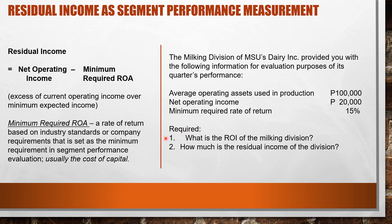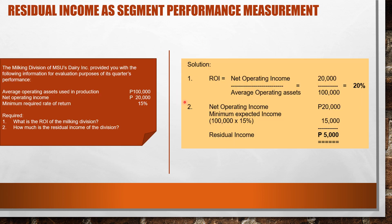Requirements: number one, what is the ROI of the Milking Division? We substitute the given figures into the ROI formula. ROI is net operating income divided by average operating assets. In the problem, we have net operating income of $20,000 and average operating assets of $100,000. So $20,000 divided by $100,000 equals 20%. Therefore, our answer for number one is a 20% return on investment.